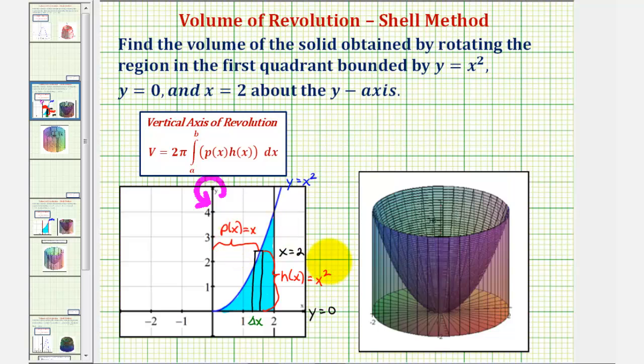And now we have all the information we need to set up our integral. The volume is equal to two pi times the integral of p of x times h of x, which would just be x times x squared,